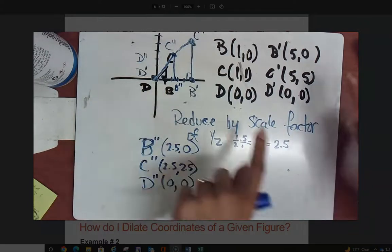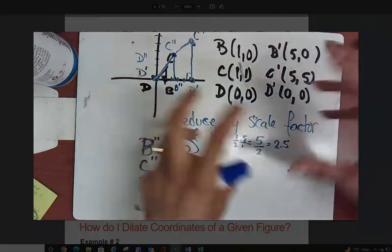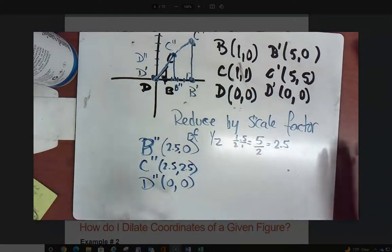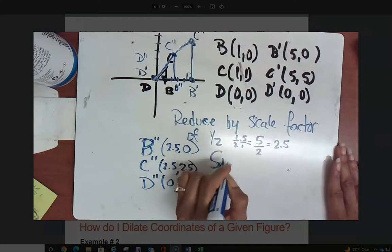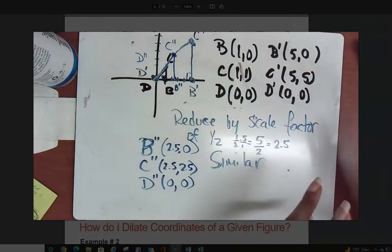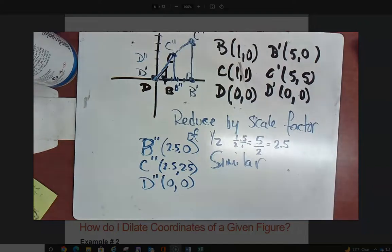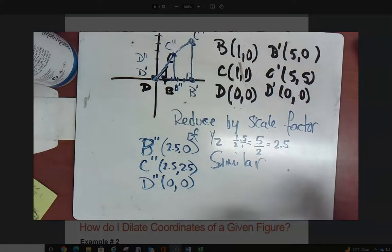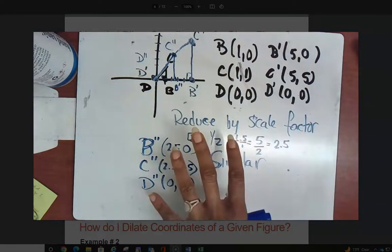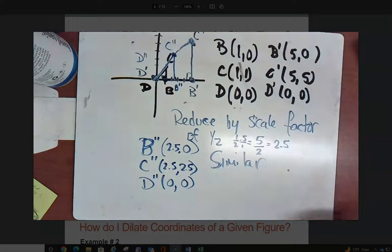We had the original, then we transformed it by enlarging, then by reducing — all three are similar triangles but not congruent, because the sides are not the same. They are similar because they have the same shape, just at a different scale. Make sure you practice with your ordered pairs and don't be afraid to work through the coordinates.